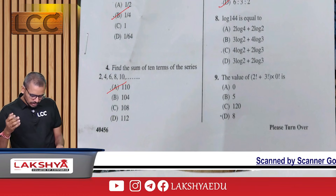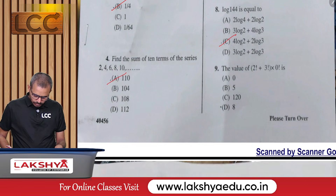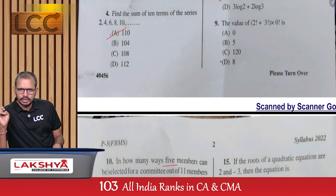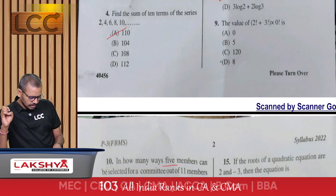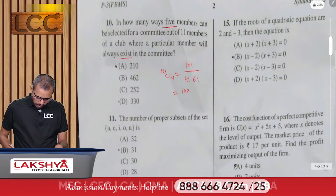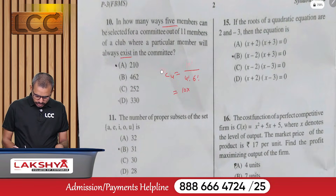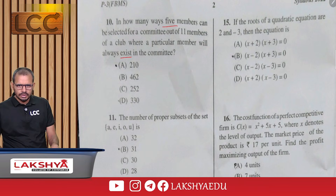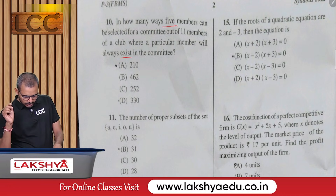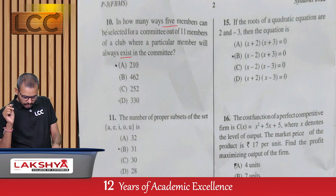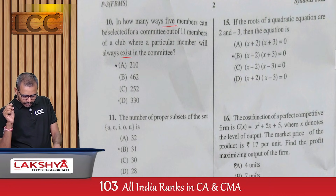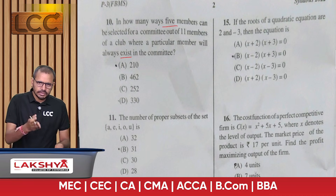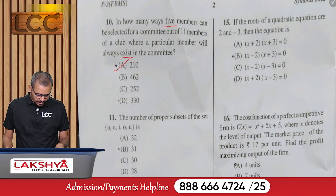Question 8: log 144 = ? — option C. Question 9: The value of 2! + 3! × 0! — option D. Question 10: In how many ways can 5 members be selected for a committee out of 11 people in a club, where one particular member is always included — option A.